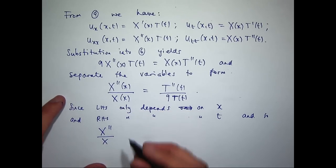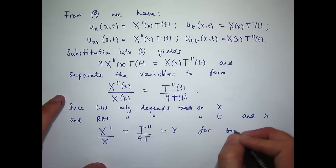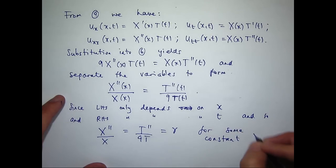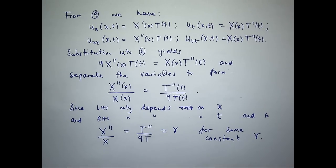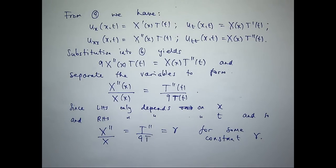I'm going to drop the independent variables to save space. We don't know what gamma is, but we'll discuss a few different cases. Our aim is to find the values of gamma that lead to a non-trivial, non-zero solution. Rearranging, I get one ODE in big X and one ODE in big T — both second-order, linear, homogeneous.